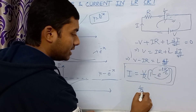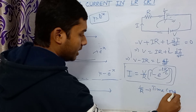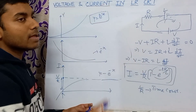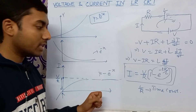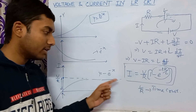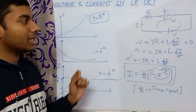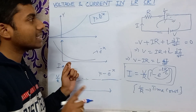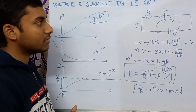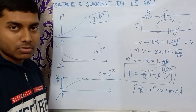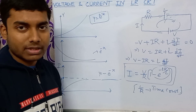L by R is the time constant of the LR circuit. We also have the CR circuit — capacitor and resistance circuit — with its own time constant for charging and discharging. The time constant of the LR circuit is L by R, and the link to the CR circuit video is in the description box. I think this video is very helpful. Please subscribe to the channel and press the bell icon. Thank you for watching.